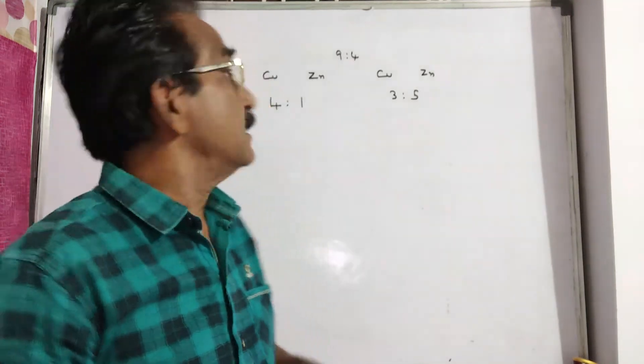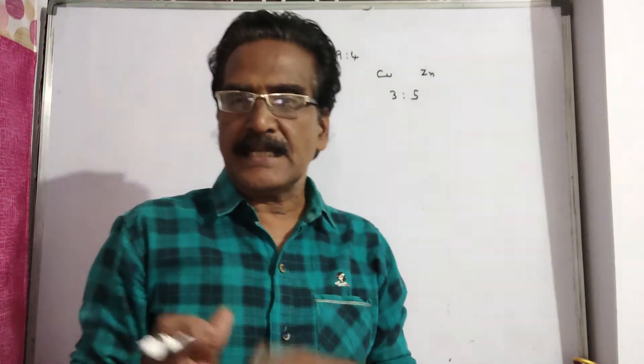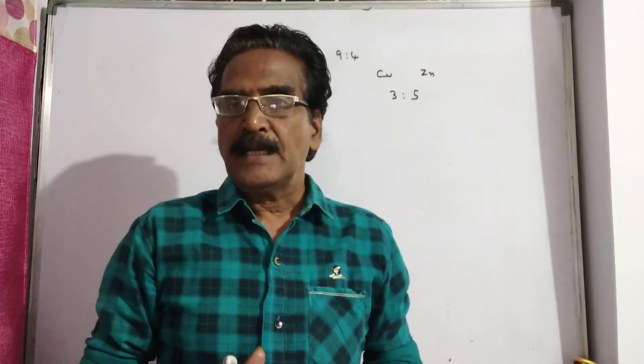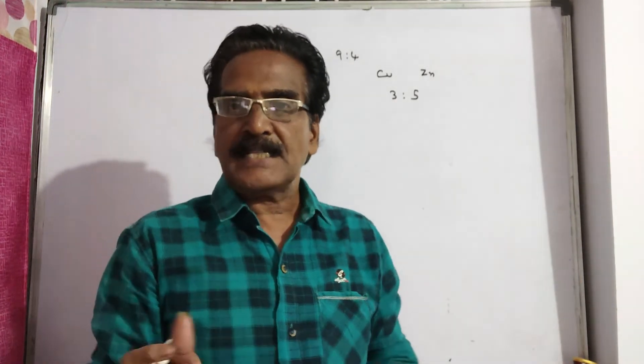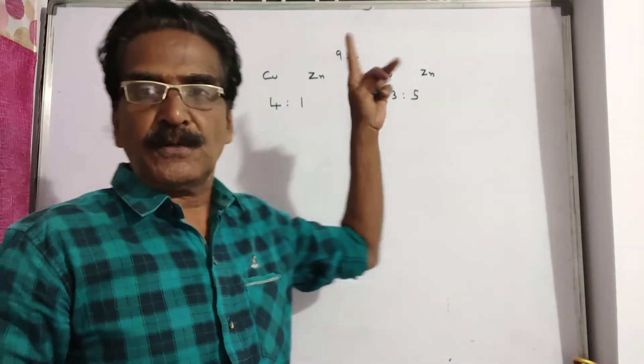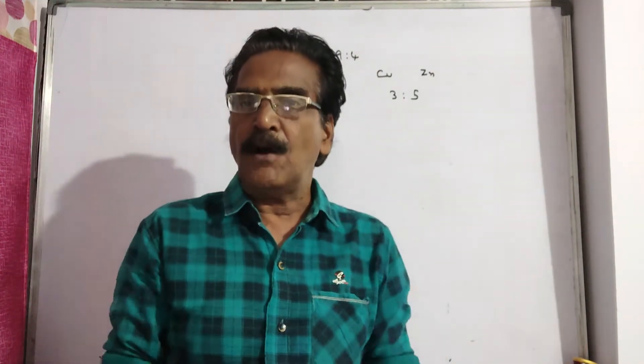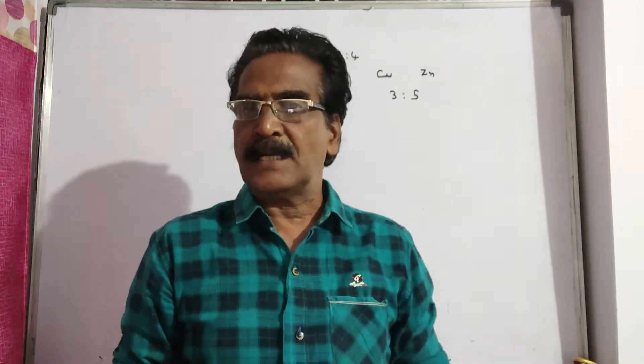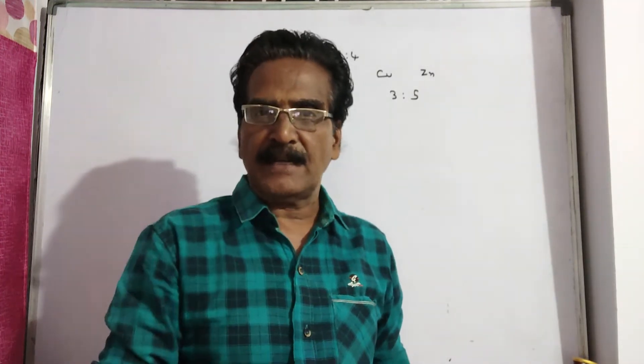See friends, two alloys contain copper and zinc in the ratio of 4 to 1 and 3 to 5. If these two alloys are mixed in the ratio 9 to 4 to form a third alloy C, then what is the ratio of copper and zinc in the third alloy C?